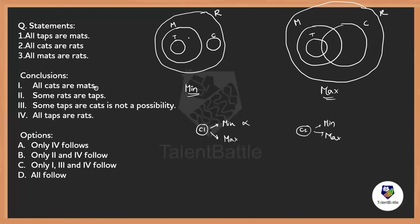Moving on to Conclusion 2: some rats are taps. In the minimum — if all taps are rats, some rats are taps is definitely clear. If rats is a vertical line and taps is a horizontal line, only some of the vertical lines are inside the horizontal lines, so yes it follows. Similarly in the maximum, some rats will be taps — only some rats, not every rat. Both conditions follow, so Conclusion 2 definitely follows.